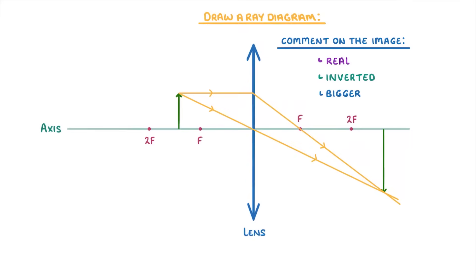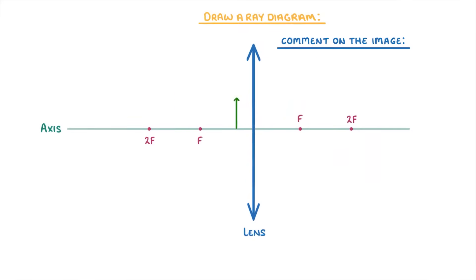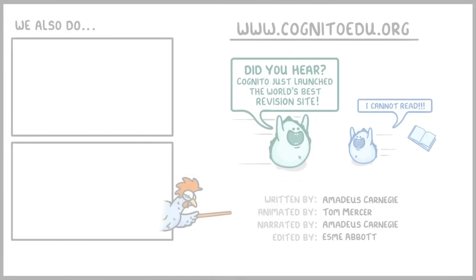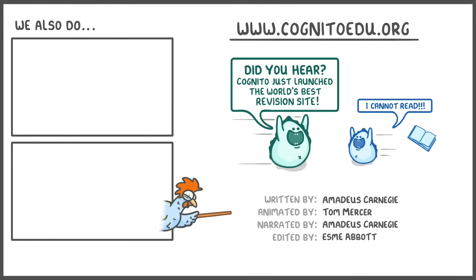The interesting case is when the object is between the focal point and the lens itself — then the refracted rays won't ever meet. So to find our image, we have to trace them backwards using virtual rays, then find the point where they meet and draw our image. In these cases, the images will be virtual, upright, and larger than the object. That's everything for today's video — if you found it useful, please do give us a like and subscribe.